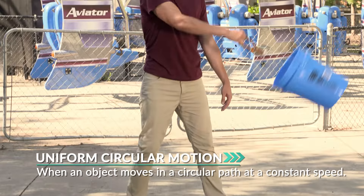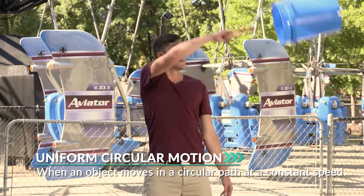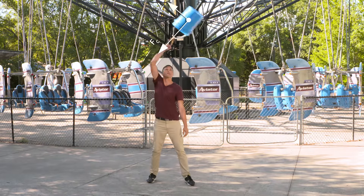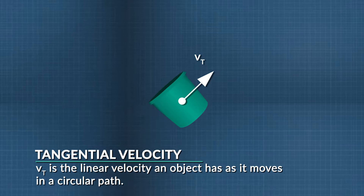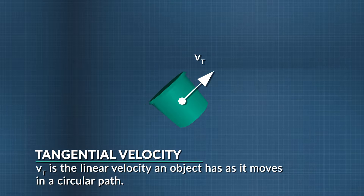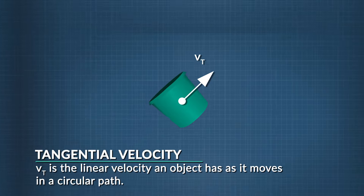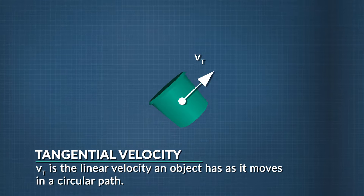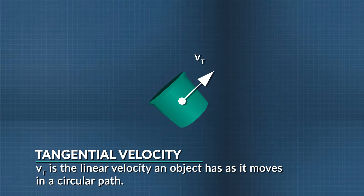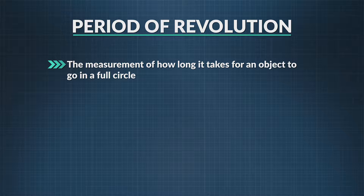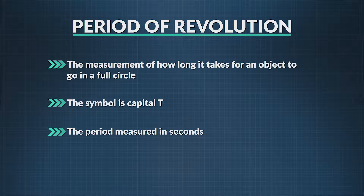Going back to our rotating bucket of water — the water stays in the bucket because it's experiencing uniform circular motion, which is when an object moves in a circular path at a constant speed. If you were to let go of the rope, the bucket's velocity is called tangential velocity, V sub T, because if tension lets up at any moment, the object flies in a straight line tangent to the circle. The direction of tangential velocity changes constantly as the object travels in a circular path. The time it takes for the object to complete a full circle is called the period of revolution, capital T, measured in seconds.